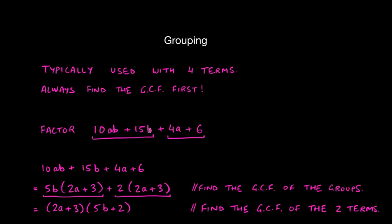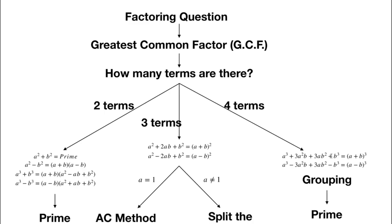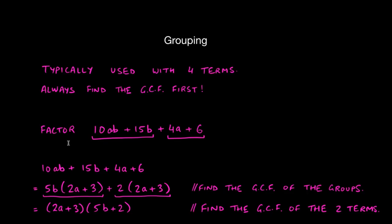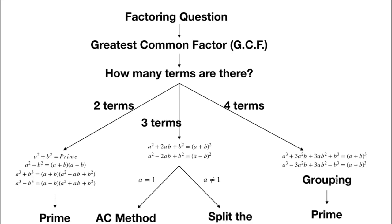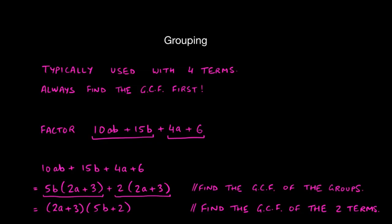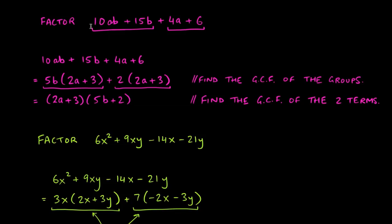For this example, this term doesn't have an 'a' and this term doesn't have a 'b', so we can't factor out a variable. For the numbers: 5 goes into both 10 and 15, but does not go into 4, so there is no GCF. That means we come down to the special formulas — but there are no cubes here, so those formulas don't work either. The next thing we have to try is grouping.